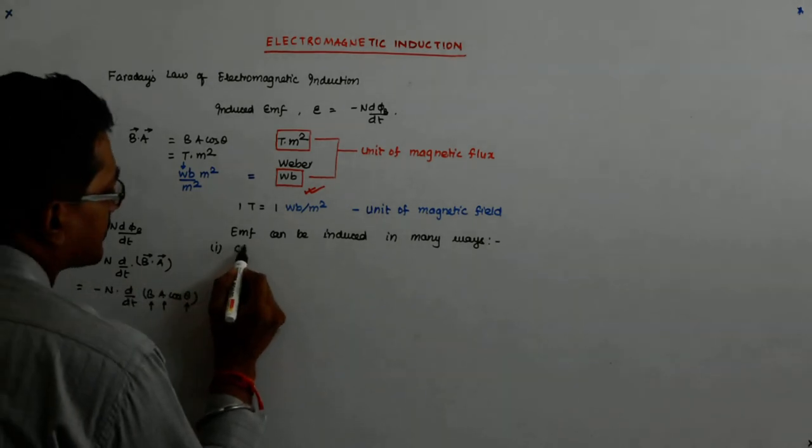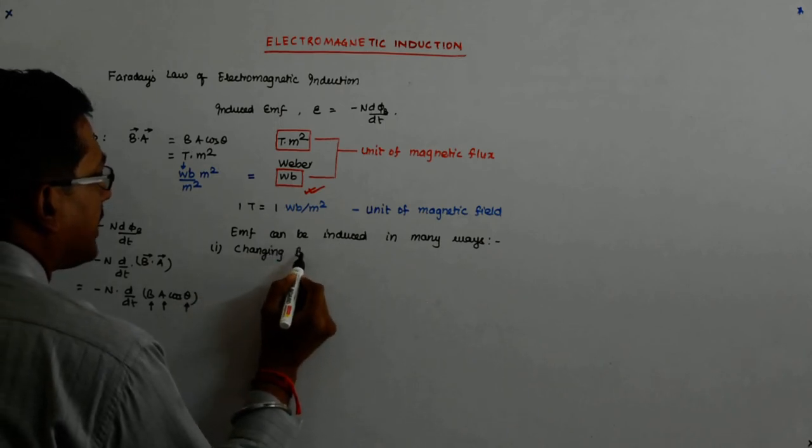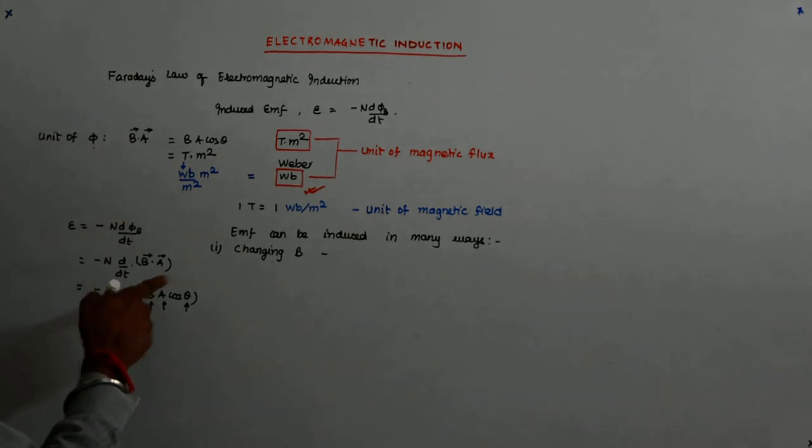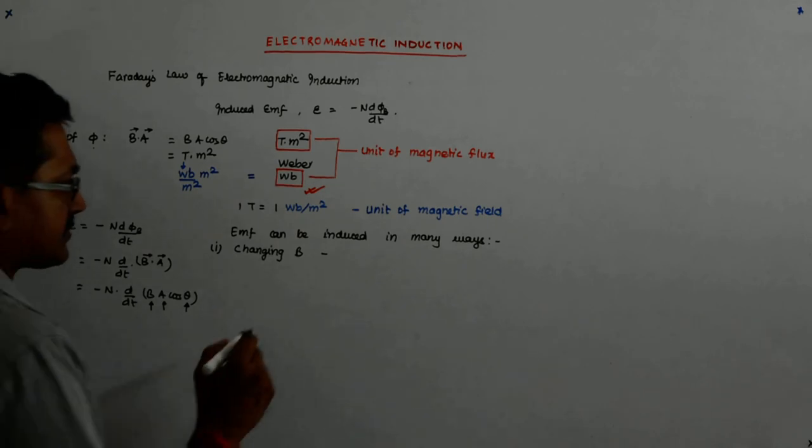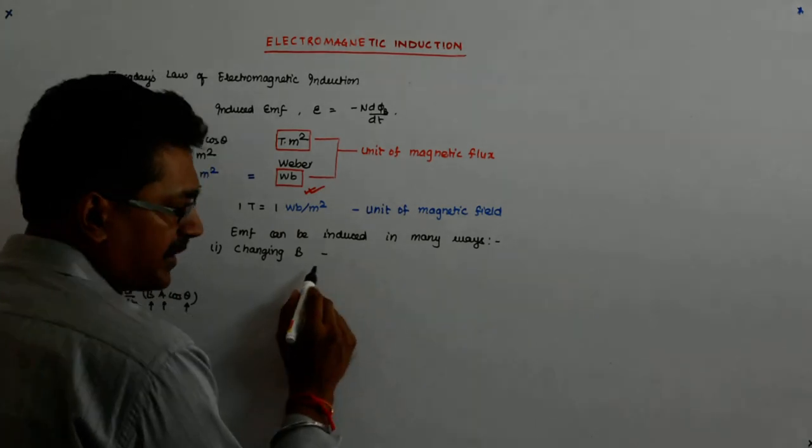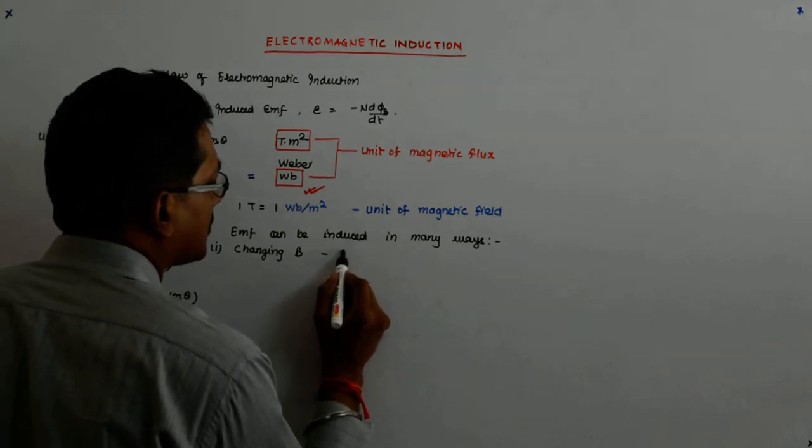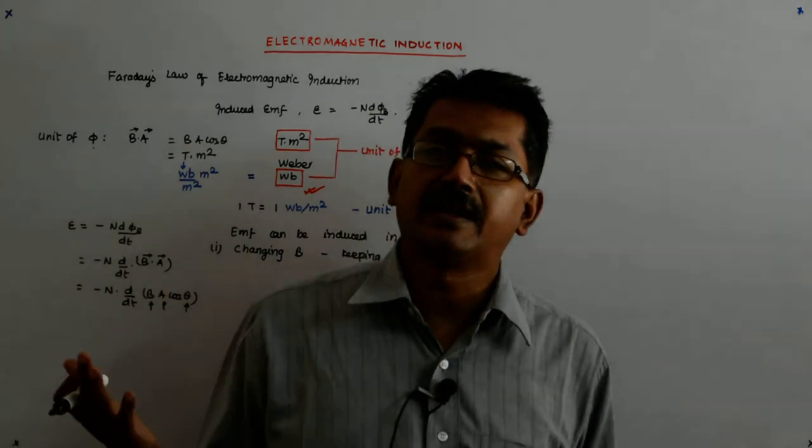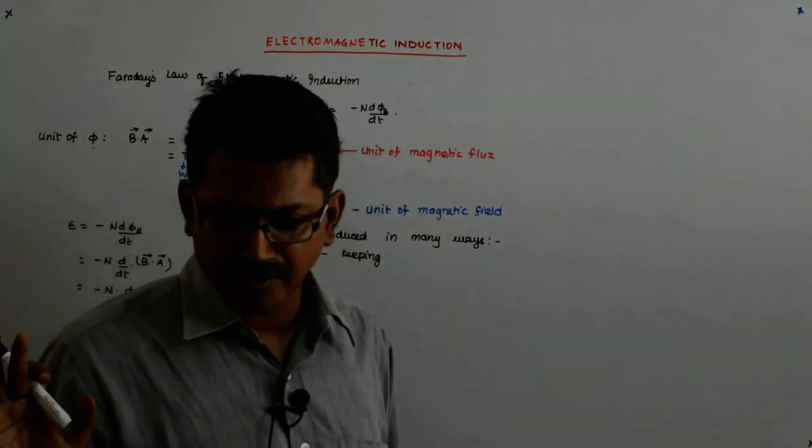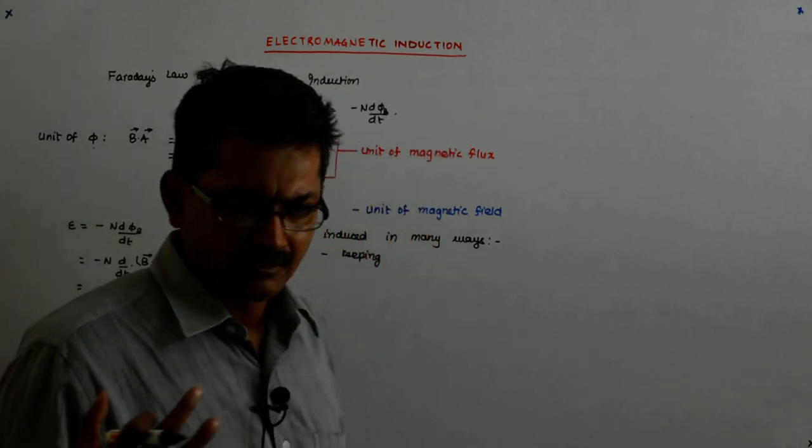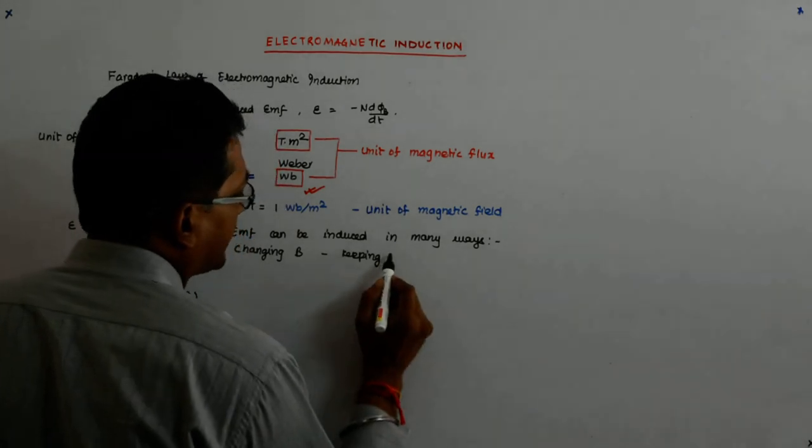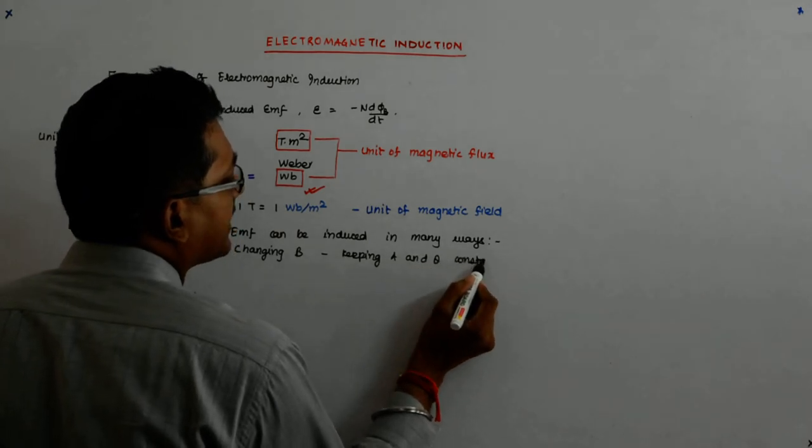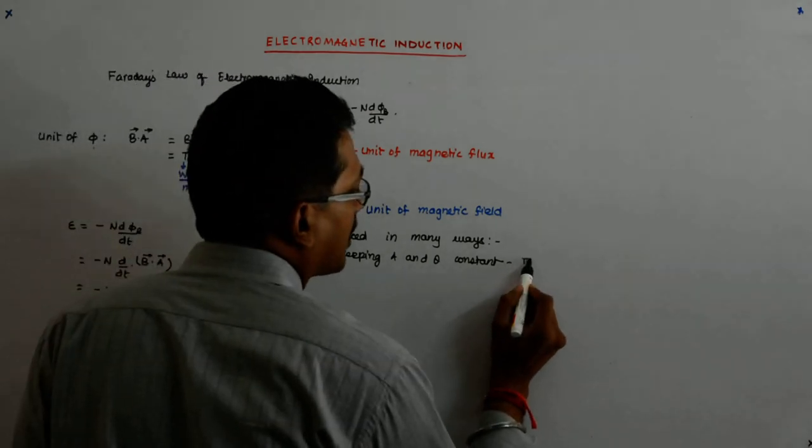But others have used and we have specific equipments available. Now if I change B, changing B, when I say changing B, I mean to say I keep the A and theta the same. There is no compulsion that I have to keep A and theta the same. You can simultaneously do all the three. But doing that actually becomes a bit difficult. So, what I am saying: changing B, keeping A and theta constant.